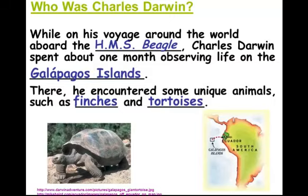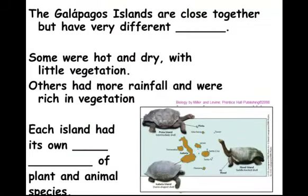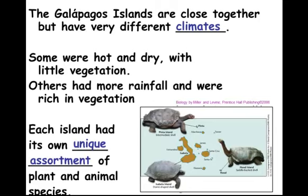The observations allowed him to think about where these organisms came from and how they got to the island. The Galapagos islands are close together, but they have very different kinds of climates and ecosystems. Some islands are very hot and dry — desert-type ecosystems with very little vegetation. Other islands in the chain have a lot of rainfall and rich vegetation, more like a rainforest or jungle. Each island had its own unique assortment of plants and animal species.